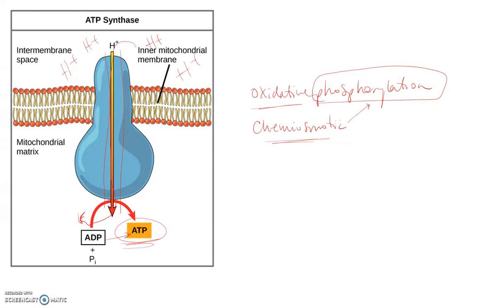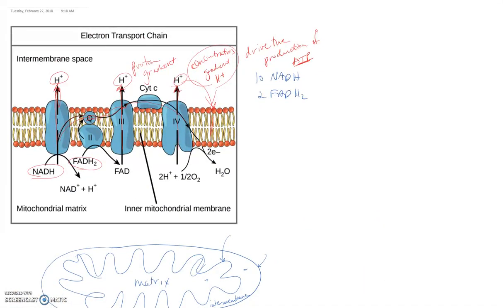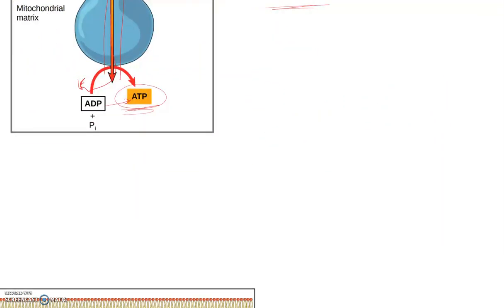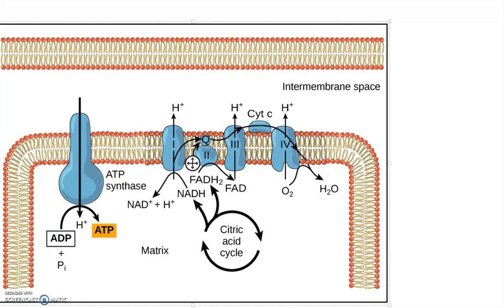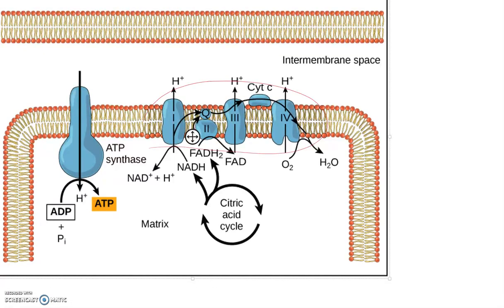Oxidative means it must be in the presence of oxygen — that's true because oxygen is required as the final acceptor of those electrons, without which the electron transport chain could not function. Chemiosmotic refers to the gradient that's been generated. This proton gradient is what's driving the production of ATP from ADP. The electron transport chain and ATP synthase are all embedded in the inner mitochondrial membrane, and there's more than just one — they're found throughout the folded inner mitochondrial membrane.